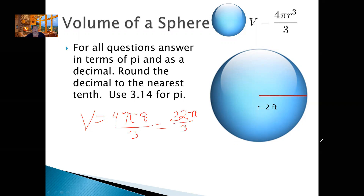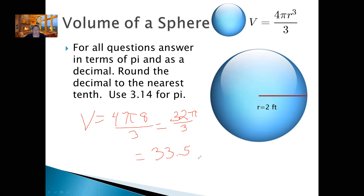Now let's find it when we use 3.14 for pi. What is 32 times 3.14 divided by 3? 33.4933. Rounding to the nearest tenth — 0.49 rounds up to 0.5 — so it's going to be 33.5. Volume is always going to be in whatever unit cubed.